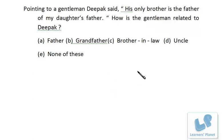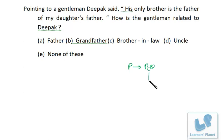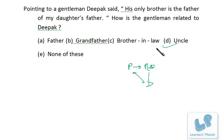Next: Pointing to a gentleman, Deepak said, 'His only brother is the father of my daughter's father.' My daughter's father means Deepak himself. So that person P's brother is Deepak's father — one generation difference between P and Deepak, with P in the parallel generation. That means P is Deepak's uncle.